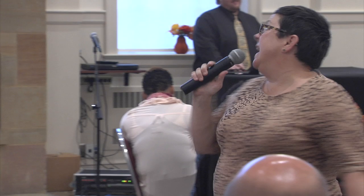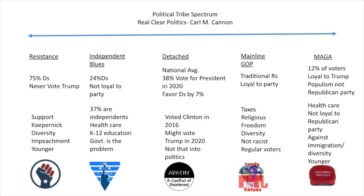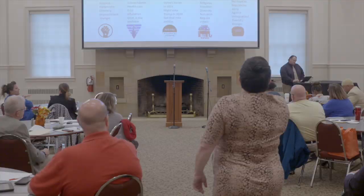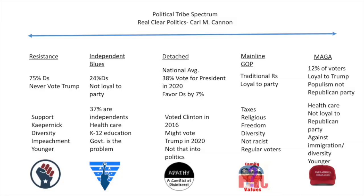And look all the way over on the right — the MAGA, Make America Great Again. They're kind of the same way. 12% of all voters — they're loyal to Trump, not the Republican Party. These are the people on the other end of the spectrum. If Obama was president, we could have switched them — the people that fall under MAGA now would have been the resistance to Barack Obama. They have more in common with each other than they think.